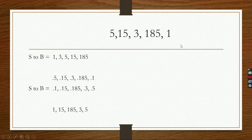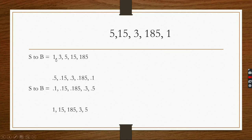These numbers are generally called arithmetical numerals. If I want to arrange them according to smallest to biggest, the arrangement will be: first 1, after that 3, after that 5, after that 15, after that 185.